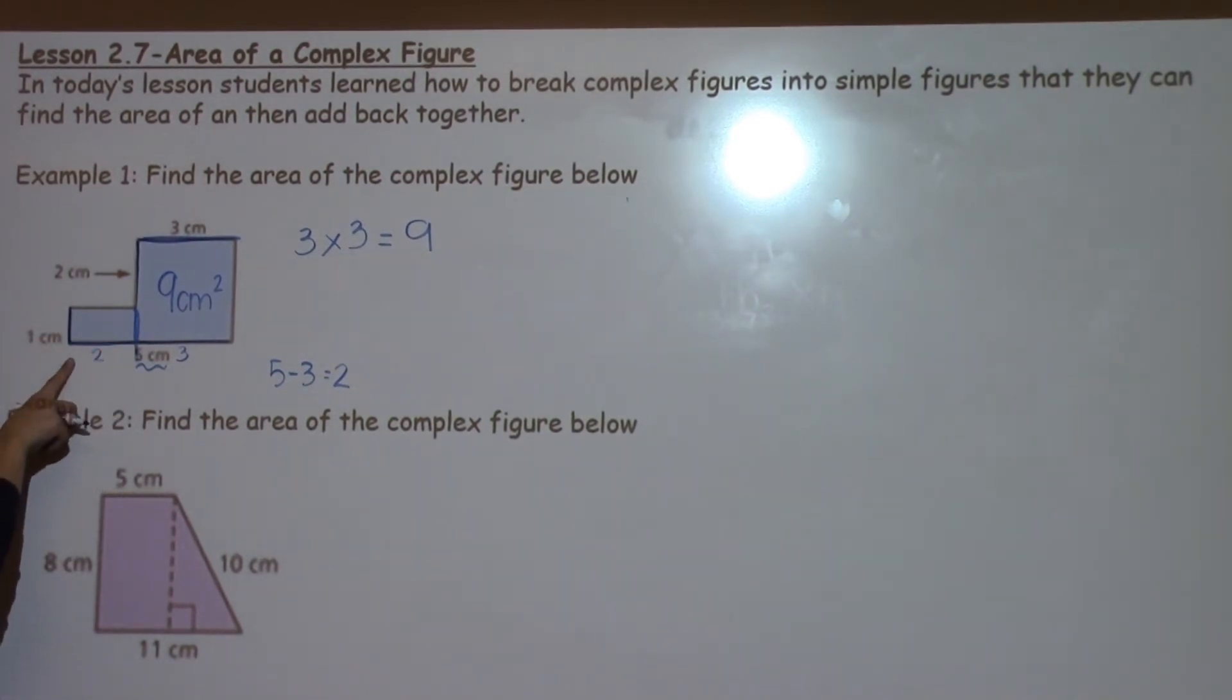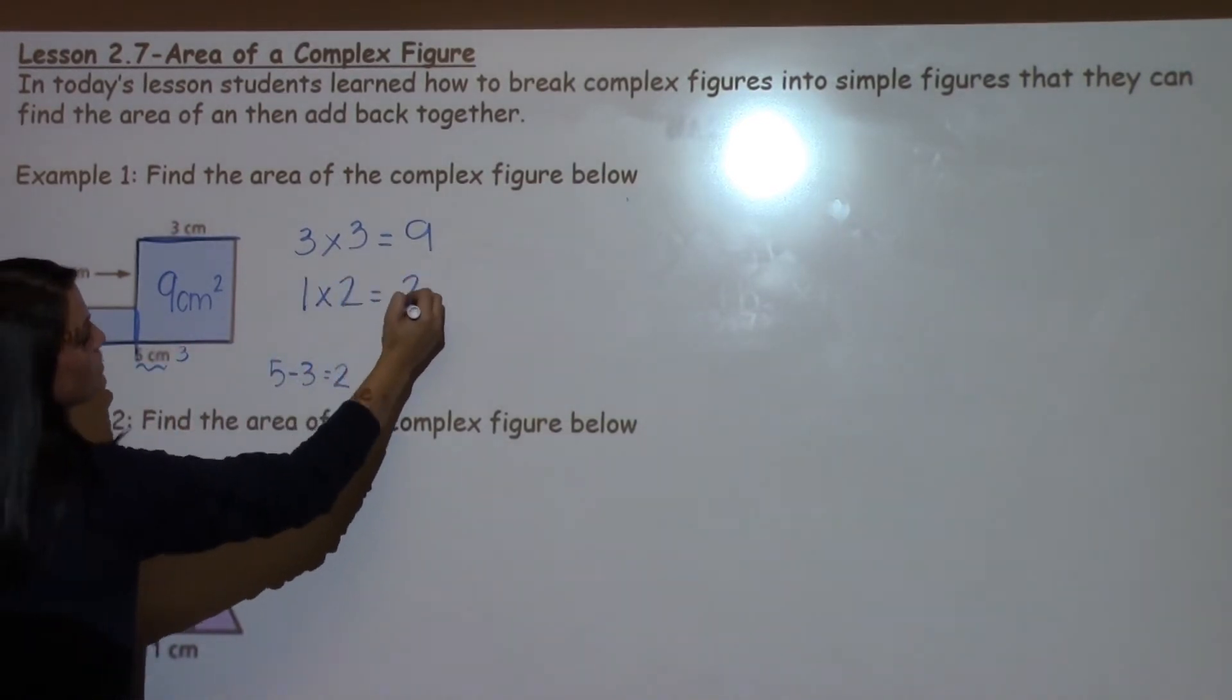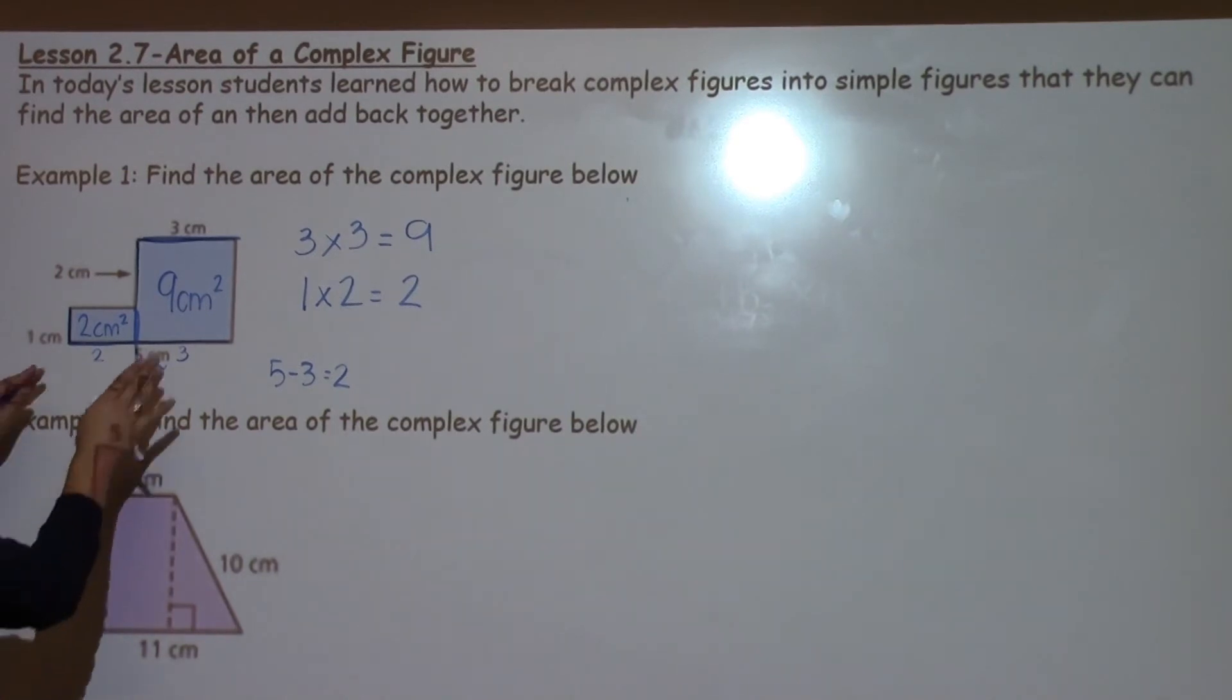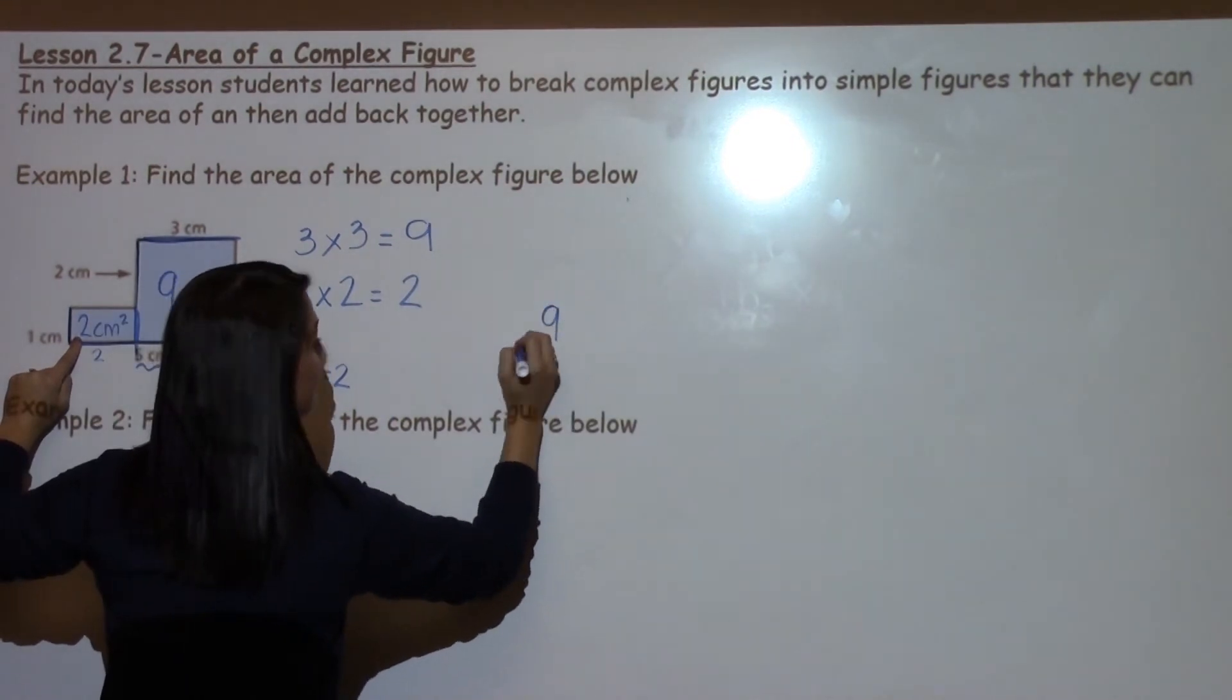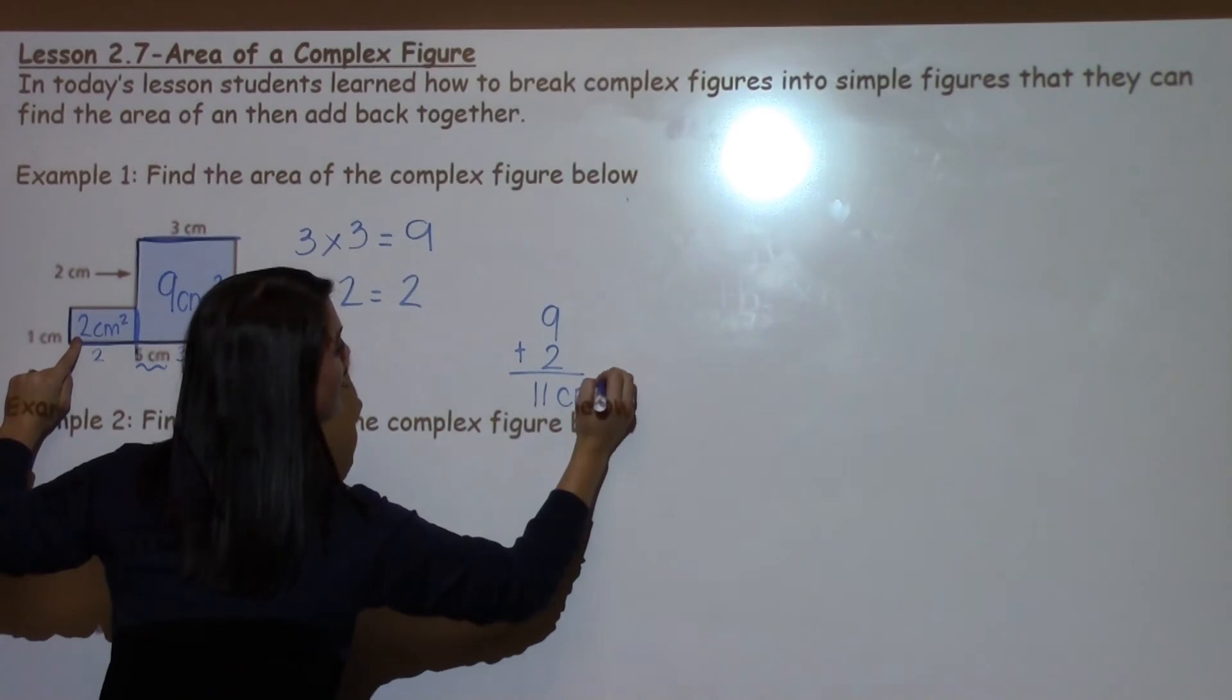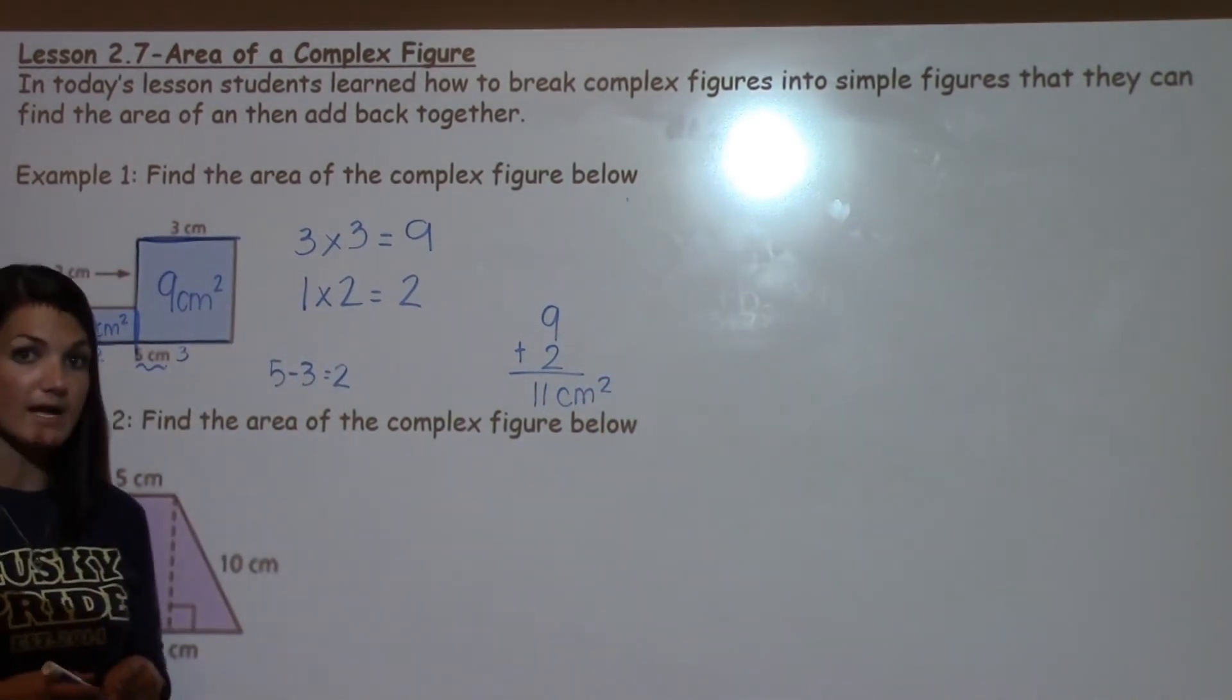Now I have both measures that I need to find the area of this rectangle and it's just 1 times 2 which is pretty simple math, it's 2 centimeters squared because we're working with area. Now because I want to find the area of the whole shape I just need to add these two numbers together. So I'm going to take 9 plus 2 to get a final answer of 11 centimeters squared and I found the area now of that complex figure.